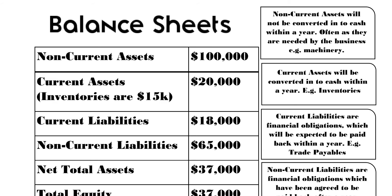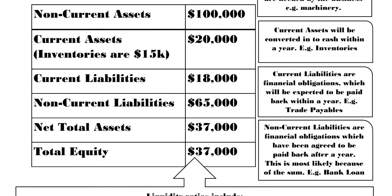Trade receivables are also current assets — if the business has issued trade credit to a customer and is waiting for payment, when they receive it that becomes cash. Current liabilities are the short-term financial obligations, such as a short-term loan or a trade payable owed to a supplier. Non-current liabilities are long-term financial obligations, for example a long-term loan. The net total is the difference between assets and liabilities, and working capital is simply current assets minus current liabilities. The net total assets should always balance with equity.